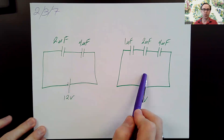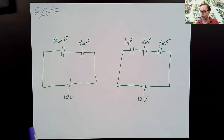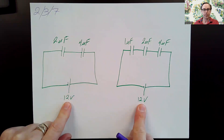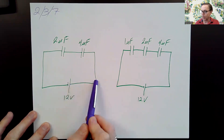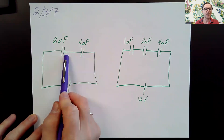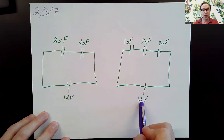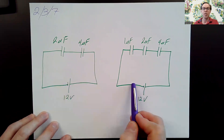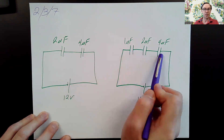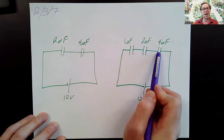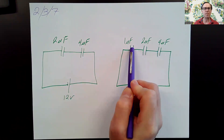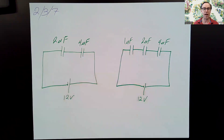Here are two circuits we're going to look at. Each circuit has a 12-volt battery. Connected to this 12-volt battery, we have one, two capacitors, and these capacitors are connected in series. In this circuit, we have the same 12-volt battery, but instead it is connected to one, two, three capacitors in series. The two and the four microfarad capacitors are still there, but I've added a one microfarad capacitor as well.